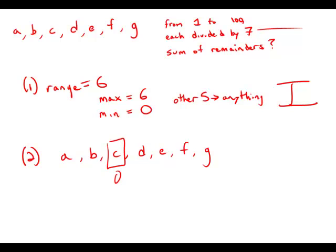The number 1 bigger than c, when divided by 7, will have a remainder of 1. The number 2 bigger will have a remainder of 2, and so forth. The number 2 less than c will have a remainder of 5, and the number 1 less than it will have a remainder of 6. So the set of remainders is {0, 1, 2, 3, 4, 5, 6}. We don't know the order, because we don't know which number will be divisible by 7, but we know all 7 remainders will appear.